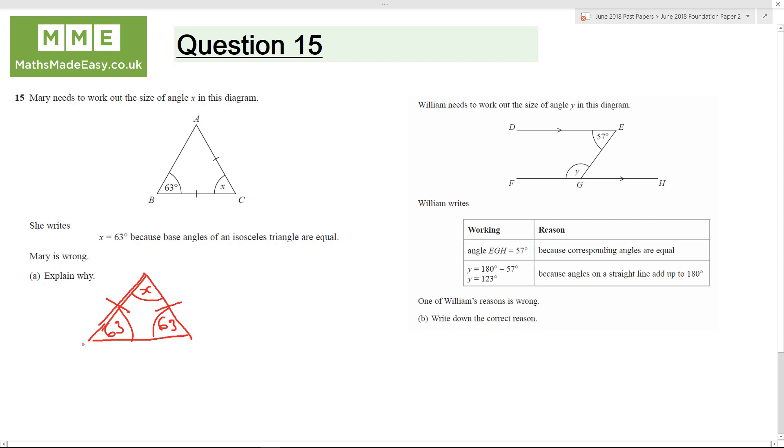William needs to work out the size of angle y in the diagram. William writes angle EGH, so this angle here is 57 because corresponding angles are equal and y equals 180 minus 57 because angles in a straight line add up to 180.